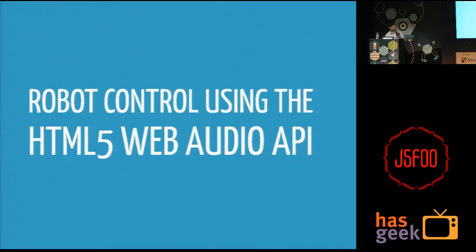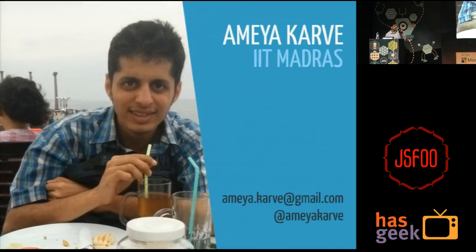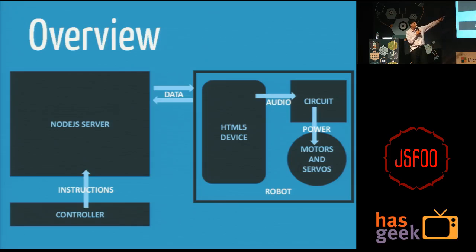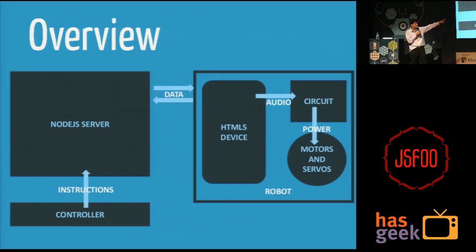Robo control with the HTML5 Web Audio API. I'm studying at IIT Madras right now and I'll graduate this summer. The overview: what was intended to be designed was a robot. The robot consisted of a device that has a browser with HTML5 support — that could have been my iPad, iPod, or phone. I could connect my computer if my robot was big enough. The phone had the audio cable connected to a very minimal circuit that I made, which I could use to actuate the motors and servos.